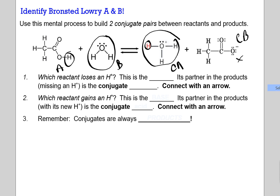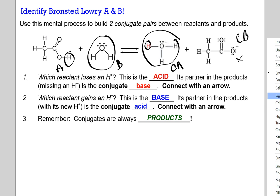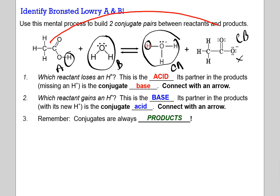The questions: which reactant loses a hydrogen? That is the acid. The partner on the product side missing that hydrogen is the conjugate base. Which one gains a hydrogen? That's water — that's the base. This new partner is called the conjugate acid. The conjugates are always going to be on the product side. The conjugate acid base pair and the base conjugate acid pair — you're following hydrogen ion movement. We'll draw those arrows connecting the acid to its conjugate base, and the base to its conjugate acid.